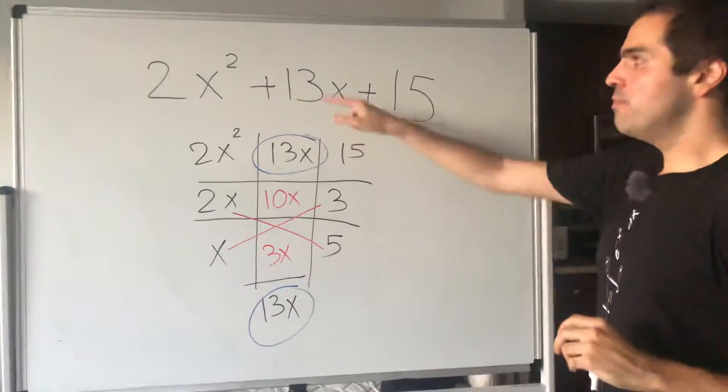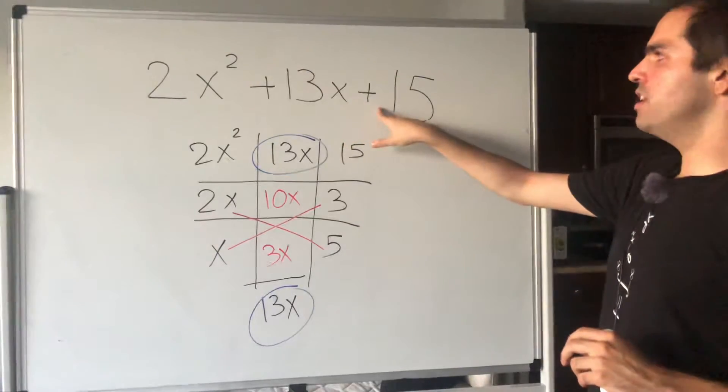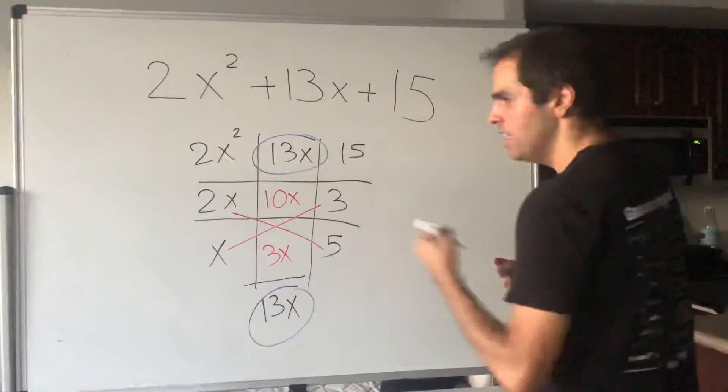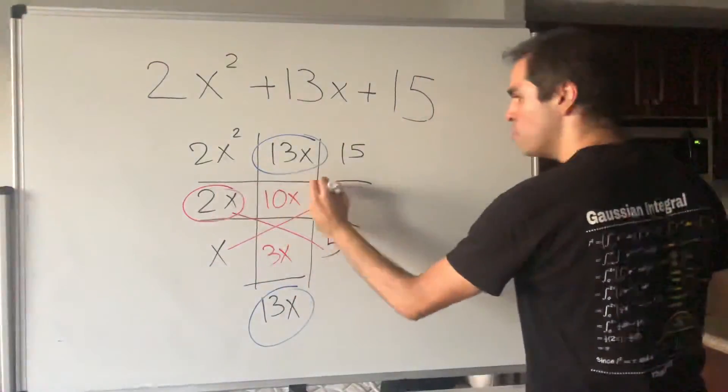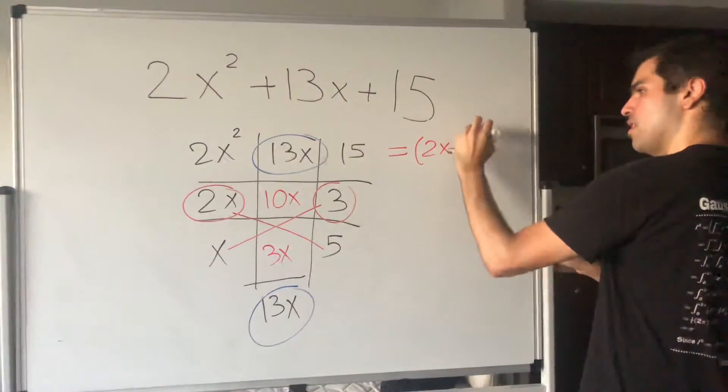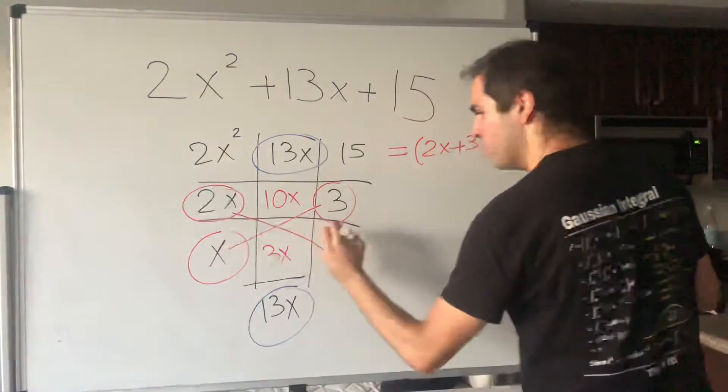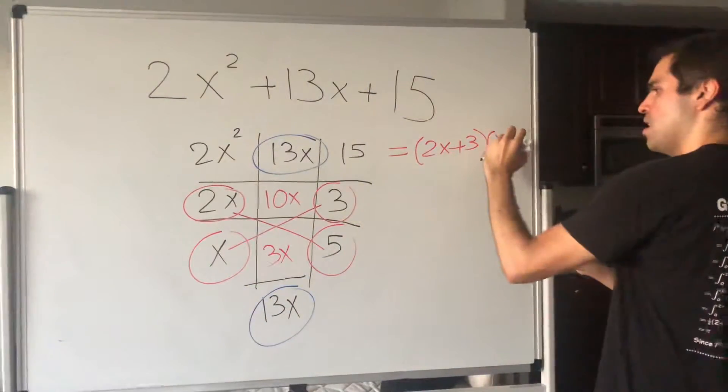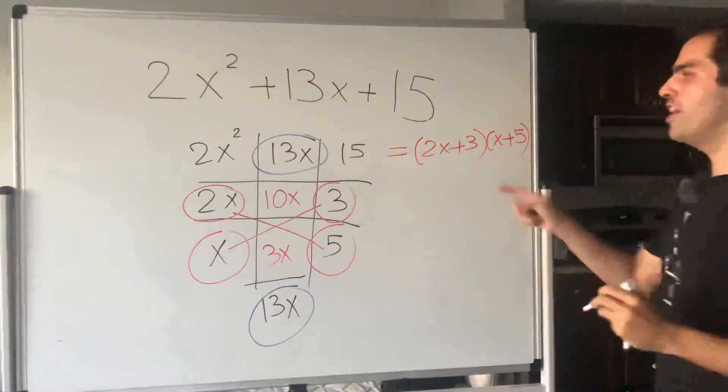Which means what? It means that 2x squared plus 13x plus 15 is simply 2x plus 3 and x plus 5. So that's the final answer.